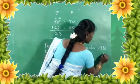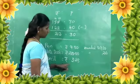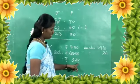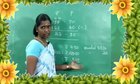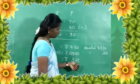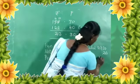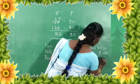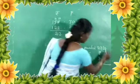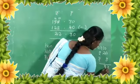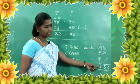Then 9.50 rounds to 10, 20.00 stays at 20, and 3.45 rounds to 3. The total estimation value is 33 Rupees.